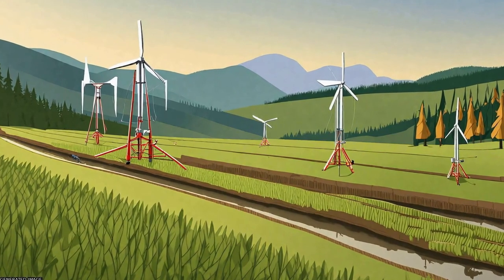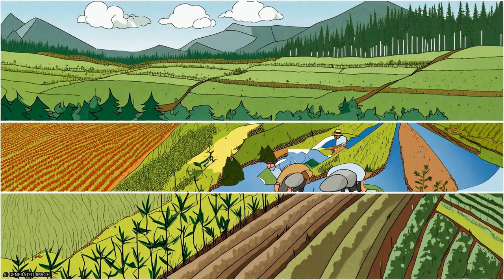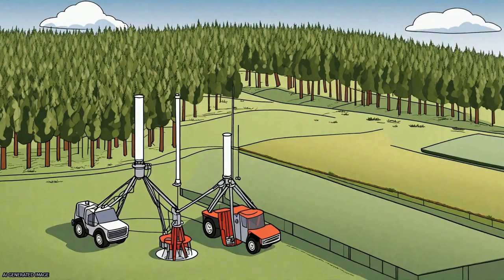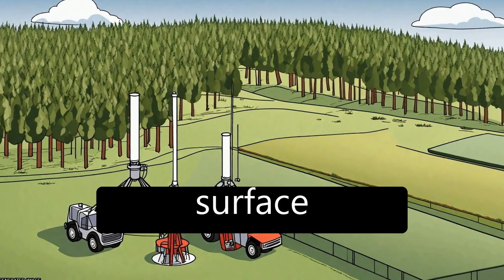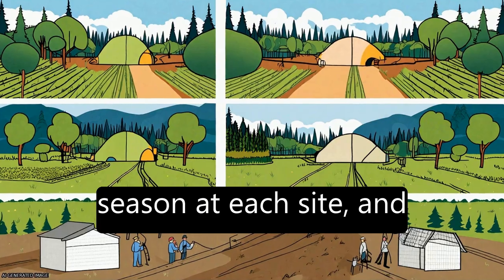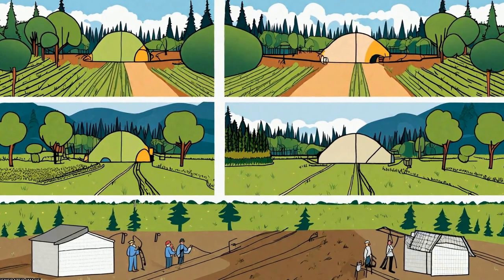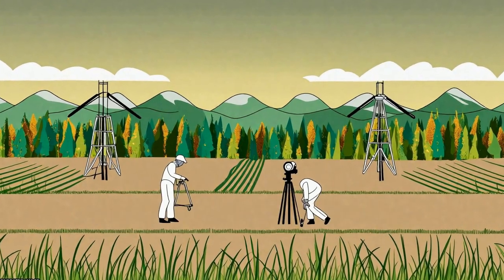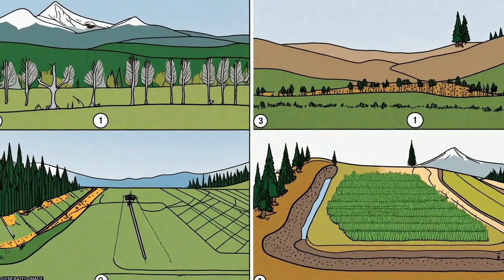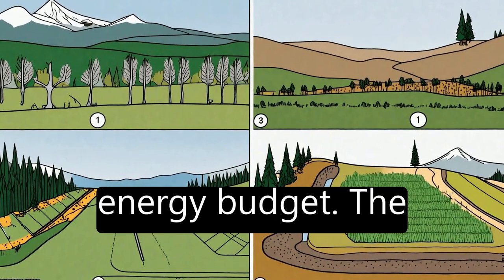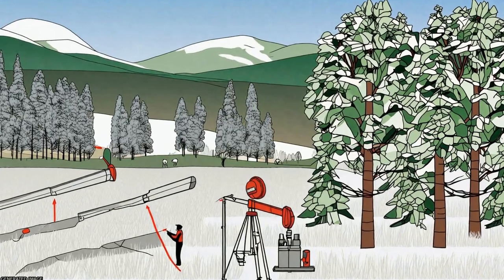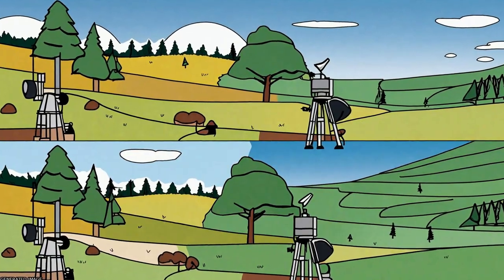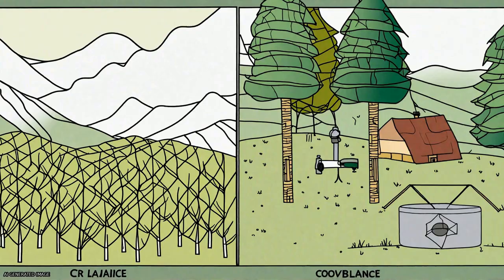The source areas of EC and LAS measurements were determined with a footprint model for each site. The main EC source areas were within a radius of 250 m at all sites, while the main source area for the LAS, with a path length of 2,390 m, stretched along a path line approximately 2,000 m long and 700 m wide.